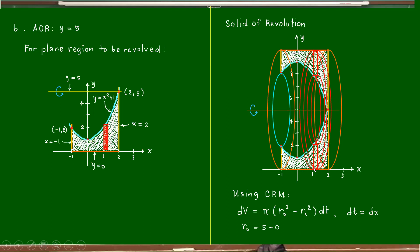The outer radius is five minus zero, which equals five. For the inner radius, we have the axis of revolution five minus the point on the parabola: five minus x squared plus one, giving four minus x squared. dt equals dx since the element is vertical.